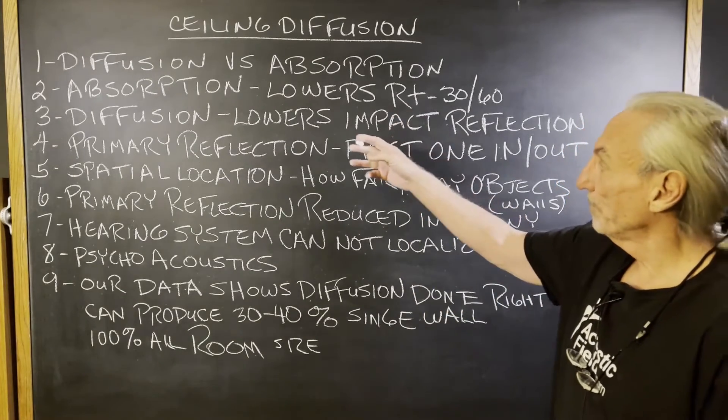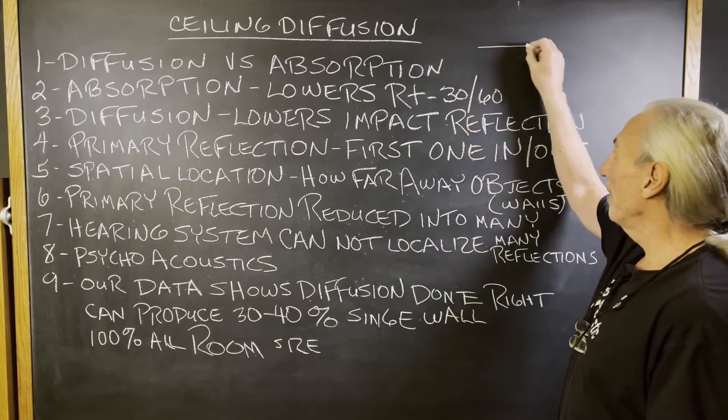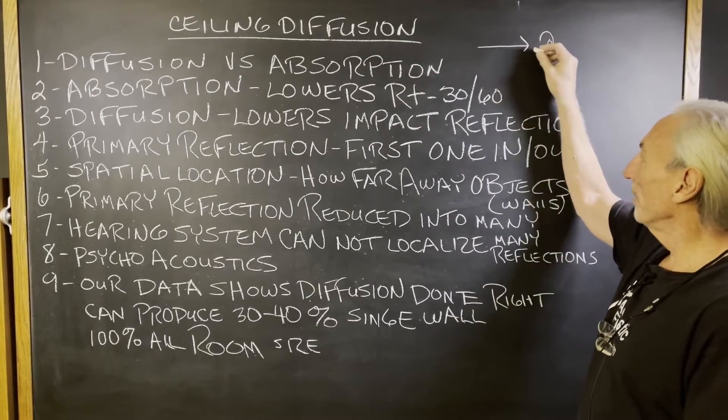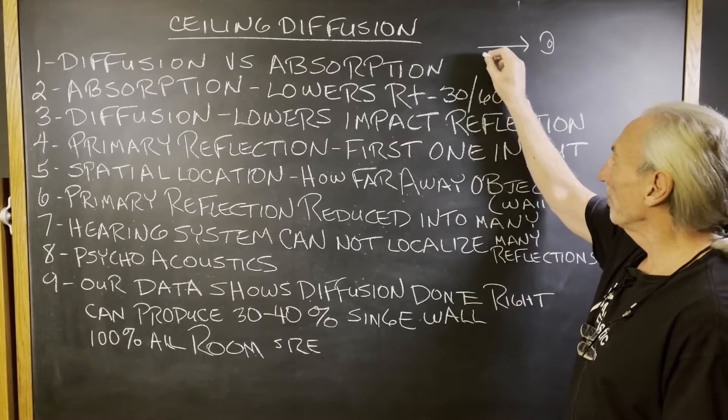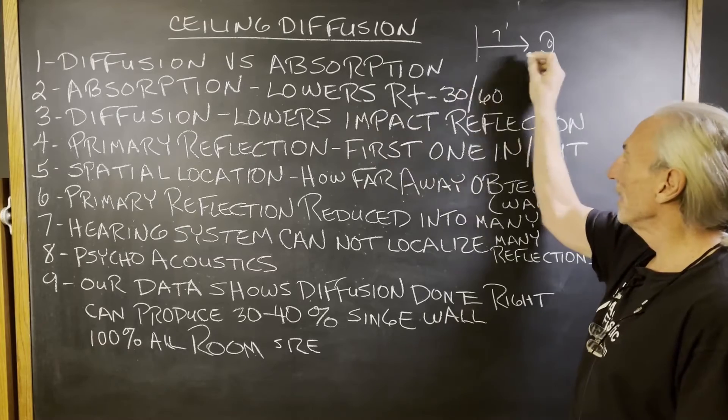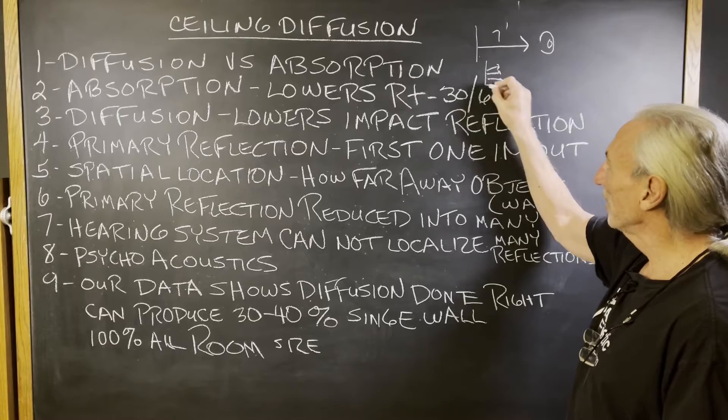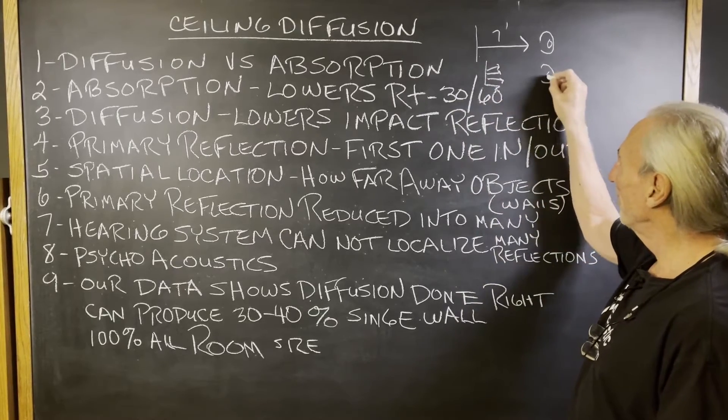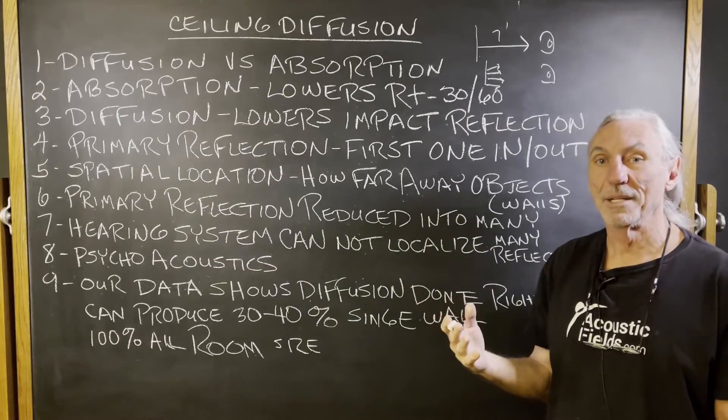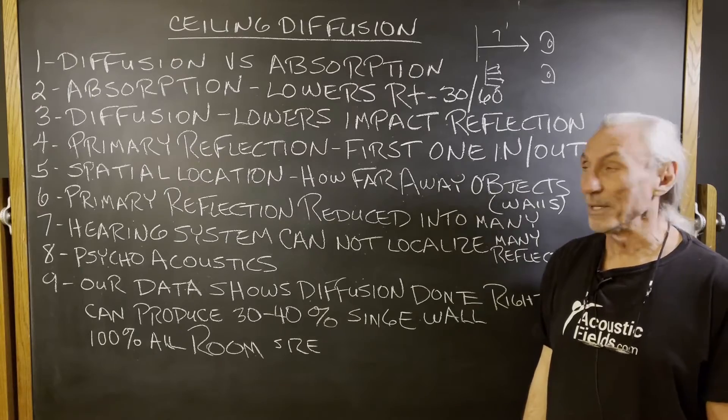Diffusion lowers the impact of the reflection. We have a primary reflection that goes into our ears. If we take that primary reflection, the ears can localize the distance involved, let's say seven feet. But if it's a bunch of little specular reflections, the ear has a much more difficult time localizing. So what it does then, it tricks our brain into thinking the surface area is much farther away than it is.